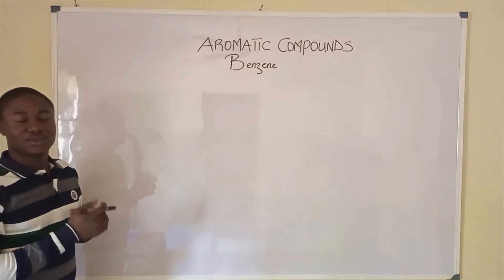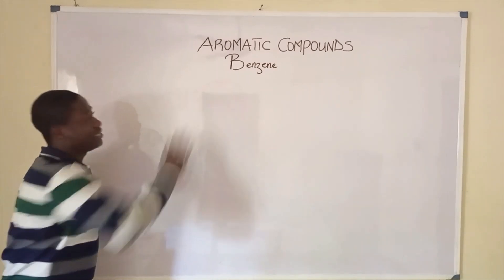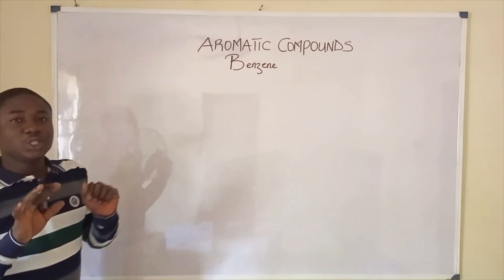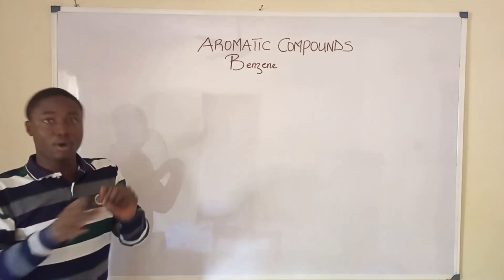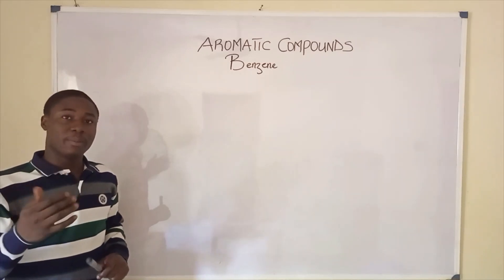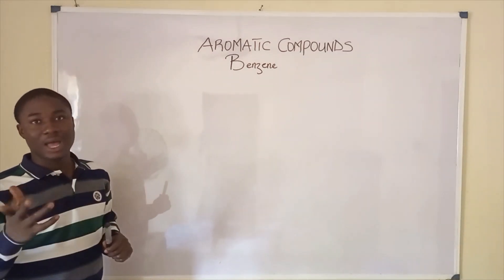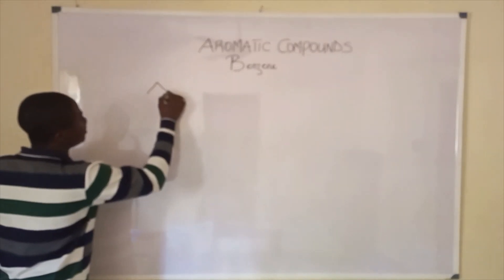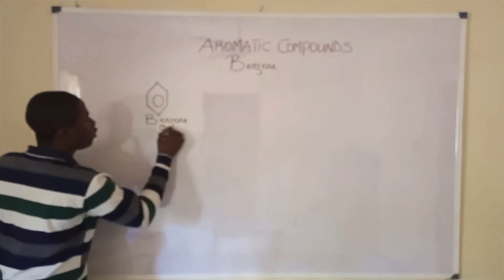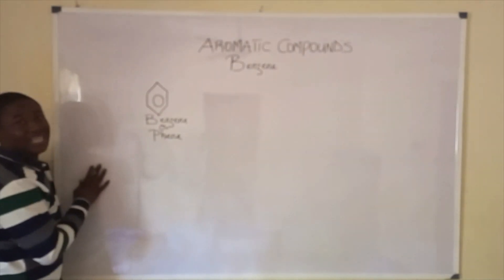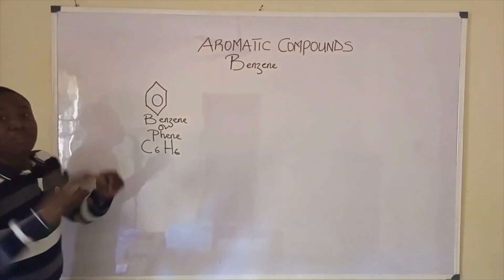Hello, my dear students and welcome back to Chemistry Made Easy with Bright Eddie. In today's video lesson, I'll be discussing benzene, which is an aromatic compound. Benzene itself is sp2 hybridized — the carbons present in benzene are sp2 hybridized. Benzene is also called phi, with a chemical formula C6H6.